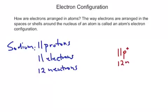But how would we arrange the 11 electrons around this nucleus? There is a fairly simple rule to help us understand where these 11 electrons can go, or where any electrons can go in an atom.